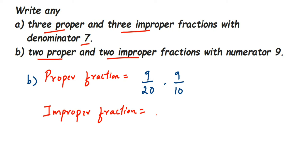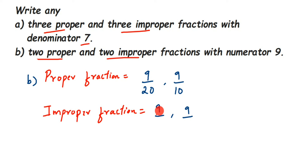For improper fractions with numerator 9, the numerator must be greater than the denominator, which means the denominator I choose should be smaller than 9. So we can take 4 and 6 — giving us 9/4 and 9/6.